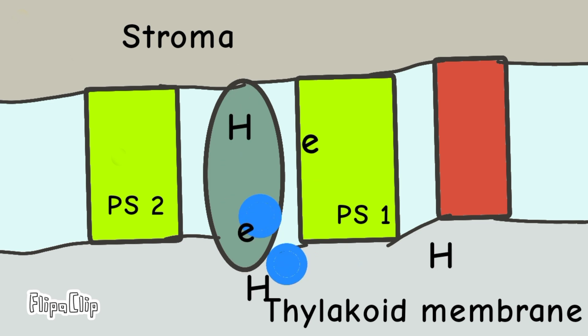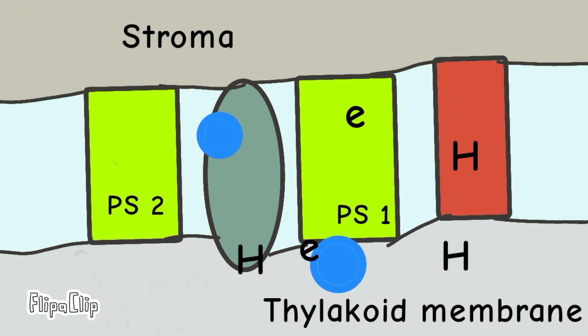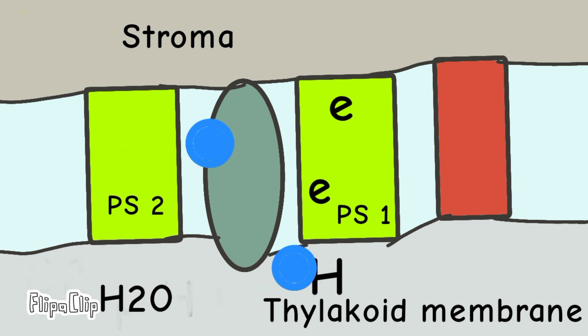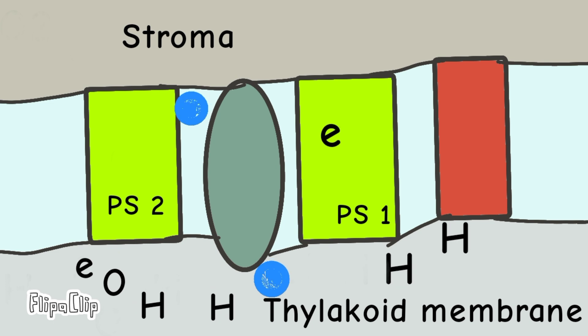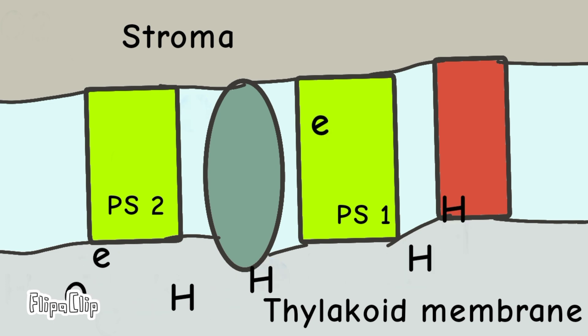These electrons ultimately reach photosystem I. Meanwhile, in photosystem II, water molecules split into protons, oxygen and electrons. These electrons replenish the electrons lost from photosystem II. Oxygen is released as a by-product.